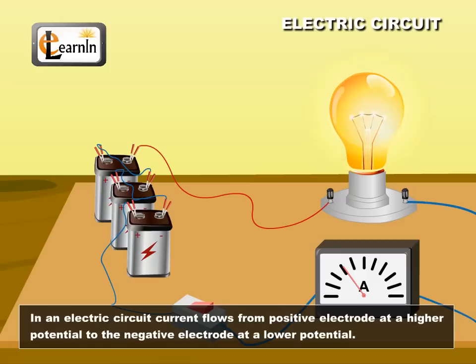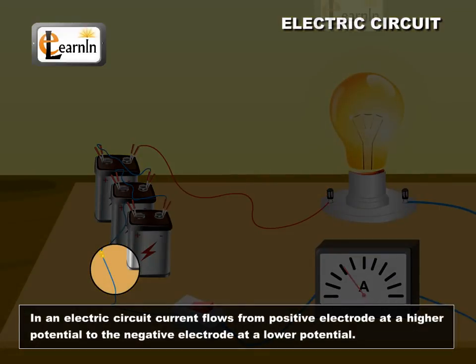In an electric circuit, current flows from the positive electrode at a higher potential to the negative electrode at a lower potential.